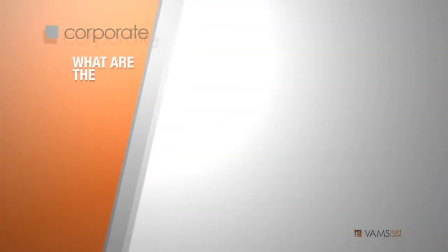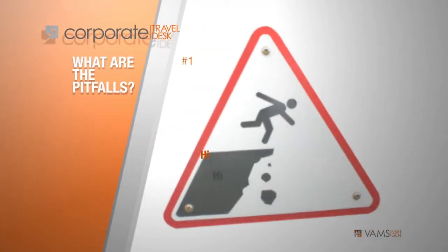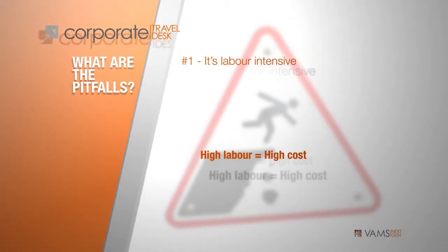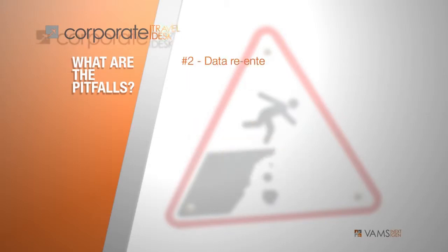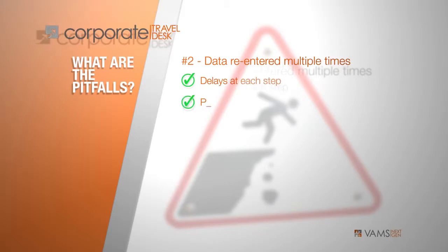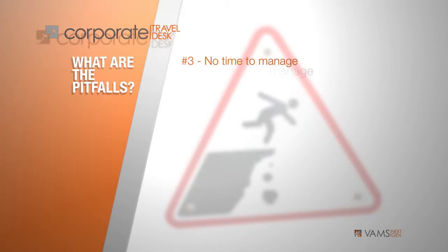So what are the problems with this approach? Number one: it's labor intensive. A booking with three services — a commercial flight, a charter leg, and a camp stay — involves three companies, five people, and twelve touch points. Problem number two: the booking is being entered over and over again, which leads to delays at each step and the potential for errors on each occasion. Many hands equals many errors.